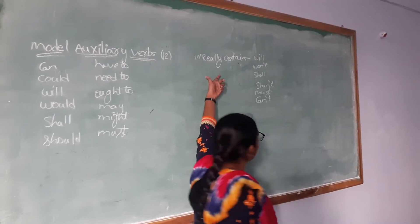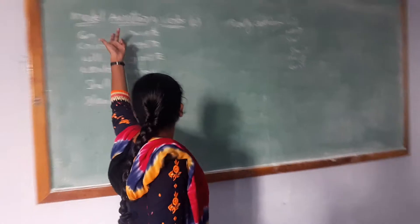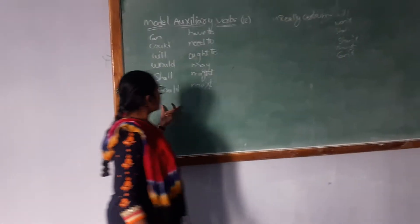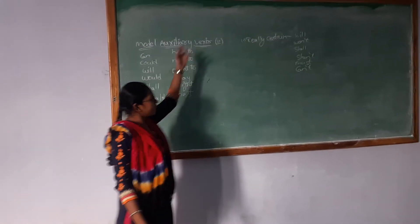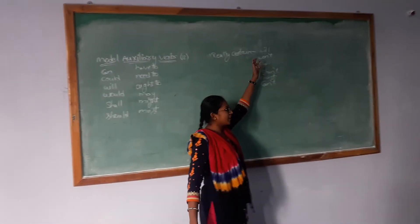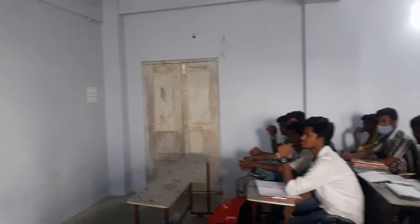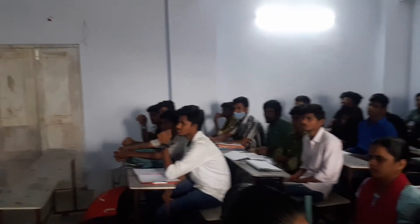In modal auxiliary verbs, we have caught any category. And in the first word, present tense — in present tense they are: will, won't, shall, shall, must, and can. In this, we have three positive words: will, shall, and must.